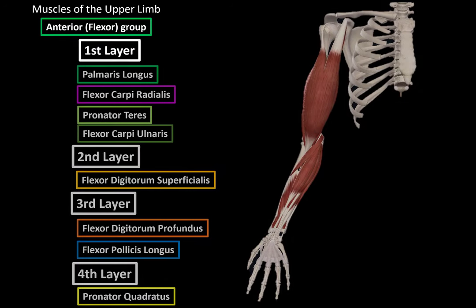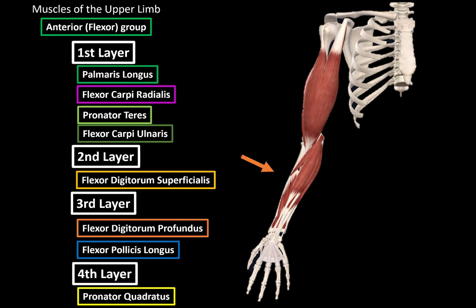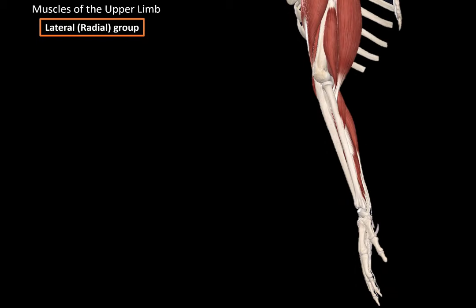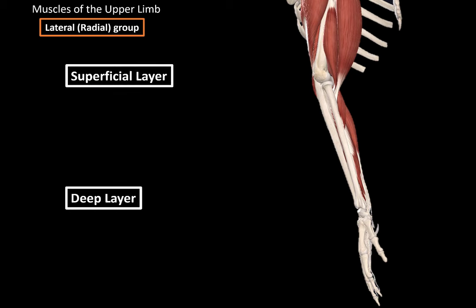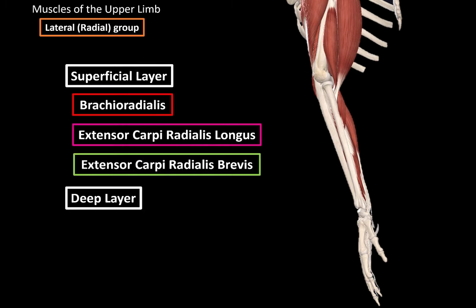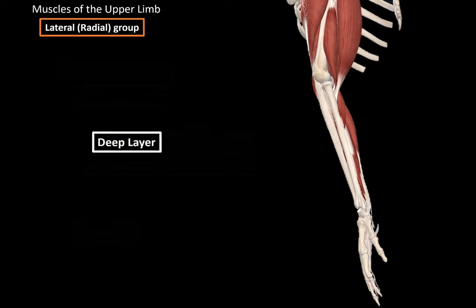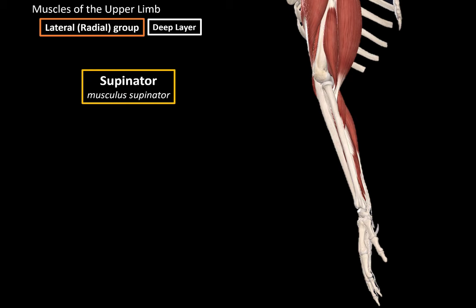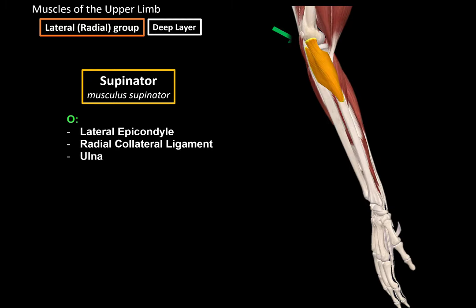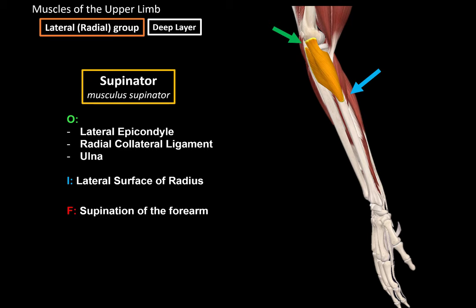That was all the muscles of the flexor group. Next, looking at the lower arm from a lateral perspective to cover the radial muscles. The radial or lateral muscles are grouped into a superficial layer — brachioradialis, extensor carpi radialis longus, and extensor carpi radialis brevis — and a deep layer consisting of the supinator. The supinator originates from the lateral epicondyle of the humerus, the radial collateral ligaments, and the ulna, and inserts at the lateral surface of the radius. Its function is supination of the forearm.